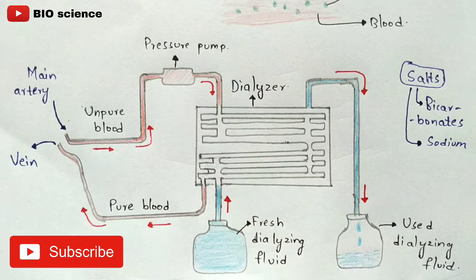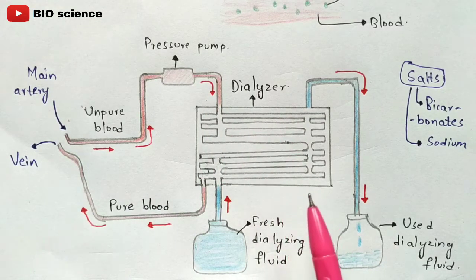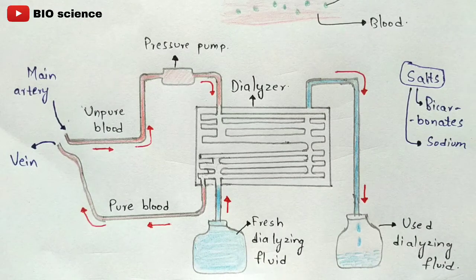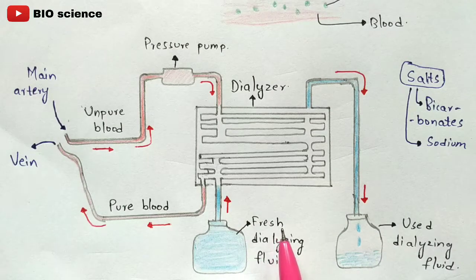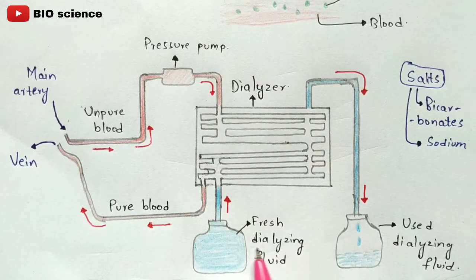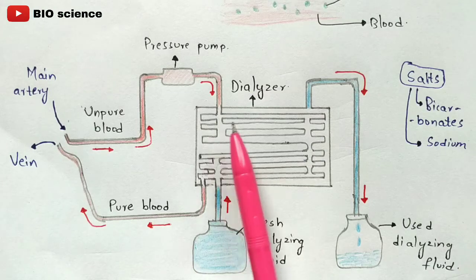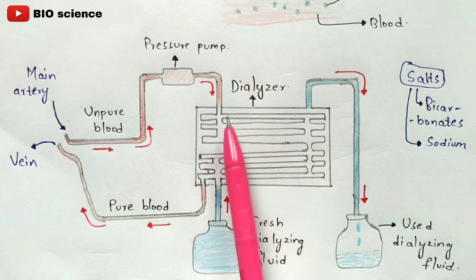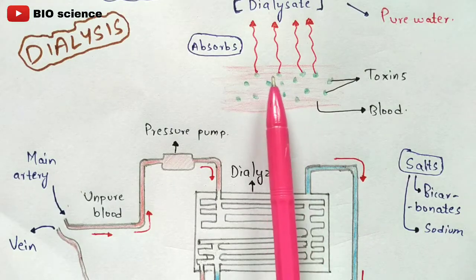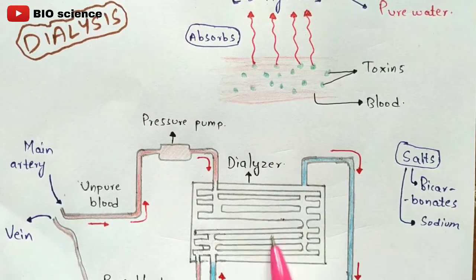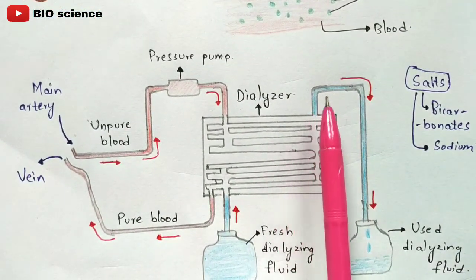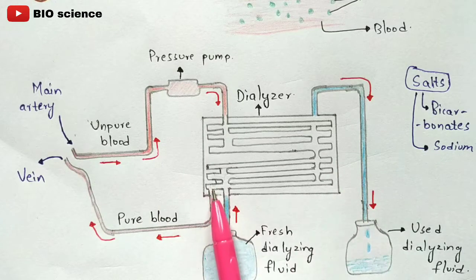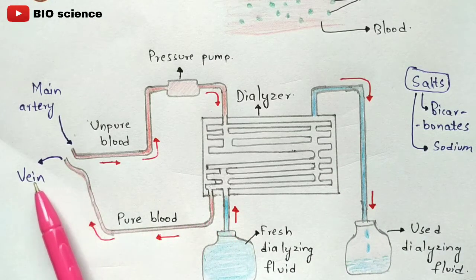On the other hand, fresh dialysing fluid — the dialysate solution containing electrolytes, salts, and pure water — is also added into the dialyser. The impure blood and the fresh dialysing fluid meet inside the dialyser, and the purification process takes place: the dialysate absorbs the toxins from the blood. Once the process is done, the used dialysing fluid is removed, and the fresh pure blood is sent into the veins of the patient.